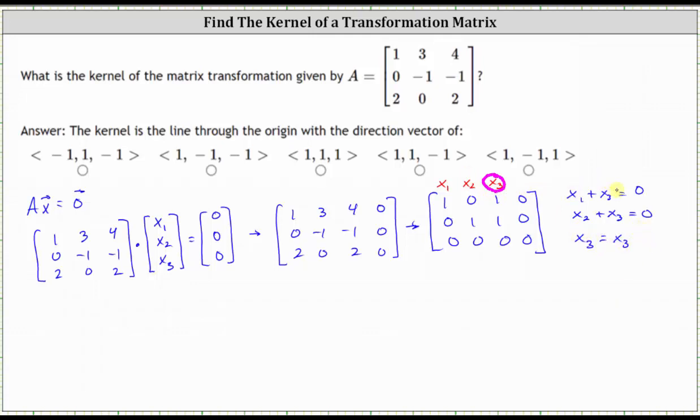The next step is to solve the first equation for x1 and the second equation for x2, since x3 is the free variable. So we have x1 equals negative x3, x2 equals negative x3, and of course x3 is still equal to x3. Let's go ahead and parameterize the solution by letting x3 equal t. Therefore, x1 equals negative t, x2 equals negative t, and x3 equals t.